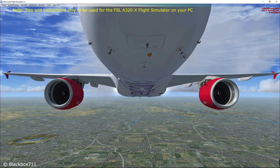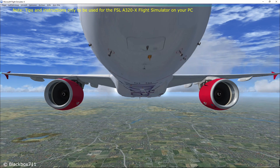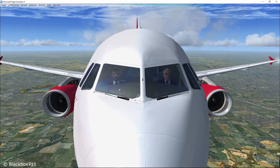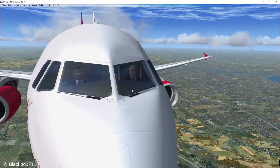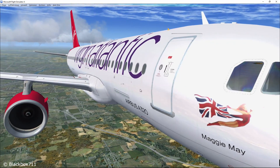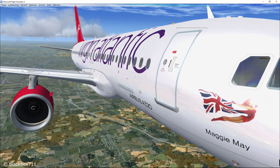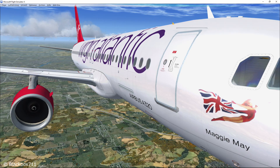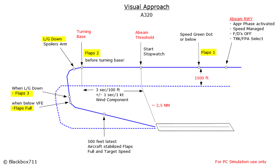Hi guys, Black Box here. In this video I'll show you how to fly a visual approach. Once you understand the basic concepts of the visual approach and have practiced it yourself, you will find that these approaches are a lot of fun. Here you see a basic illustration of how a visual approach is flown in the Airbus A320. You can download this chart from my Dropbox account — the link is in the description below.